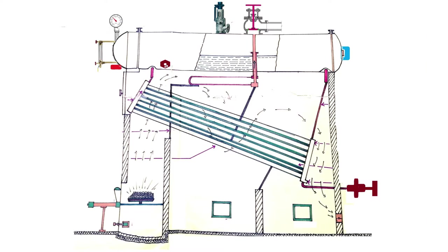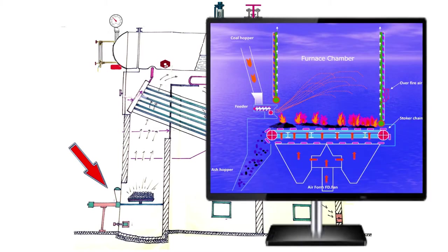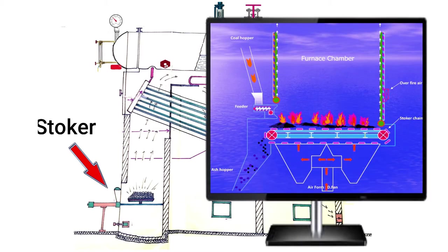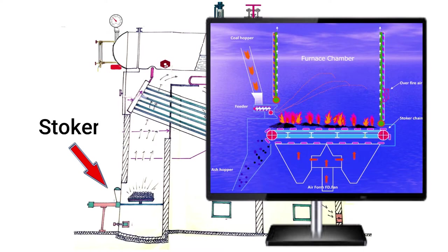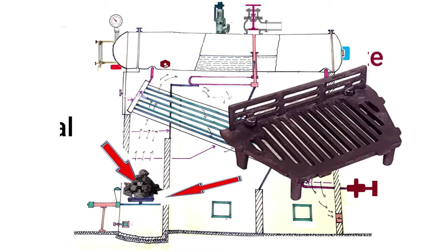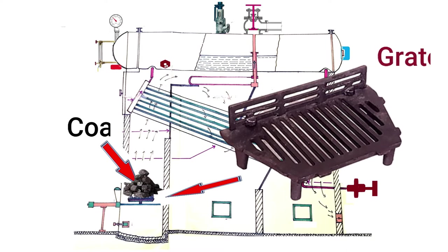Starting with the stoker — the function of the stoker is to supply or feed coal on the surface of the grate. Generally we prefer a chain type stoker to feed the coal on the surface of the grate. The grate is a perforated type tray on which we place the coal, with a number of holes provided in the tray.